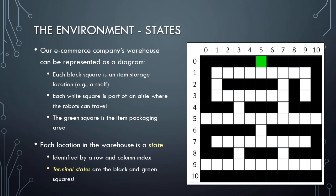Note that each of the 121 locations in the warehouse represents a state, or situation in which a robot might find itself at a particular point in time. Each state can be identified by a row and a column index. The item packaging area, for example, is at location row 0, column 5. Also note that the black and green squares are terminal states. This means that if our AI agent decides to drive a robot into one of these areas while it is being trained, then that training episode will be finished.